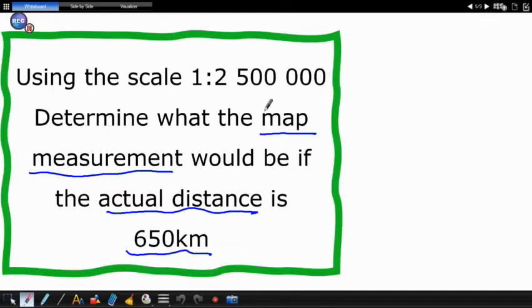Here, this is why I like the seventh method, because in this case, if you're looking at this question, they are giving us the actual distance, which is 650 kilometers, and then they want the map measure.